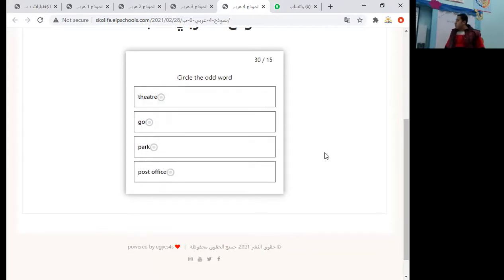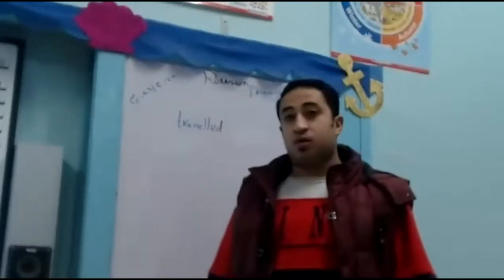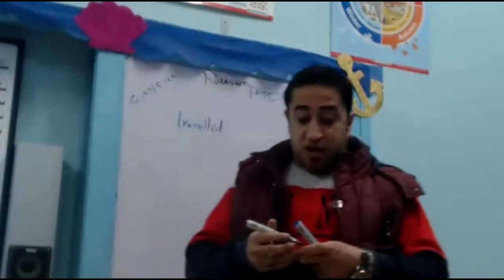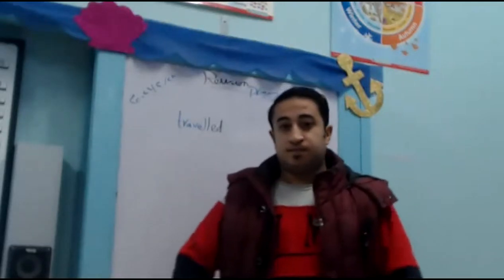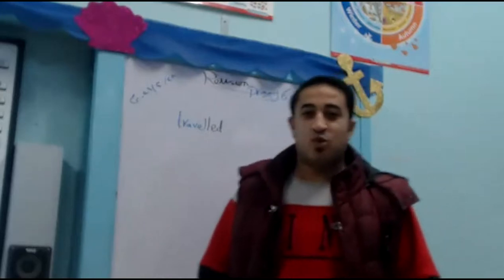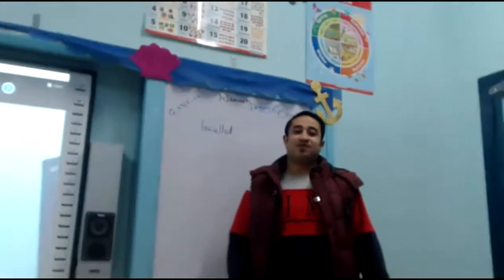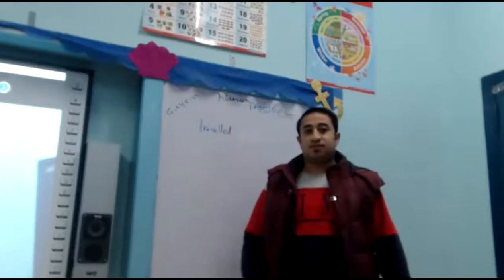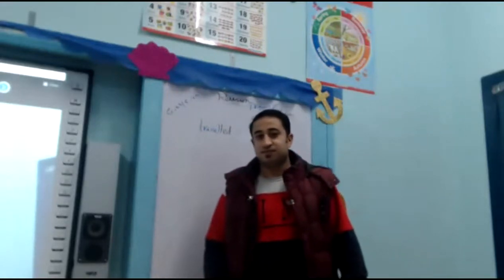Circle the odd one: theater, park, post office — these are places, so we choose 'go' because go is a verb. We have finished the questions. I'm waiting for your questions. Raise your hand, I'm waiting.